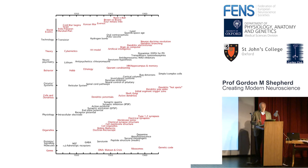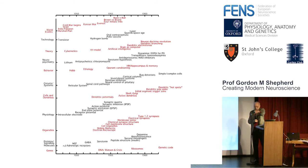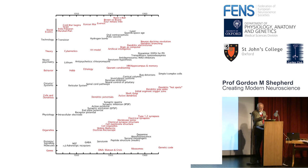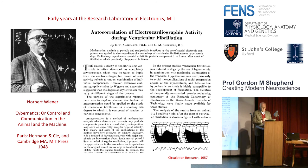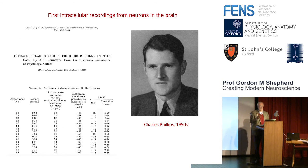I'd like to end on a more personal note, because I may be the only one here who was publishing in the 1950s. My first publication was in 1957, based on work I did in 1956 when I was in medical school in Boston in the laboratory of Norbert Wiener, using an analog computer to calculate auto and cross correlations — in this case of ventricular fibrillation.